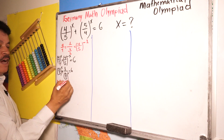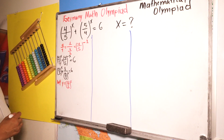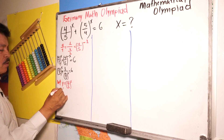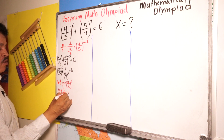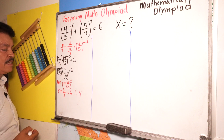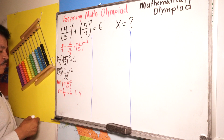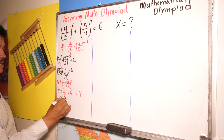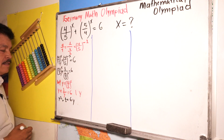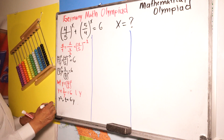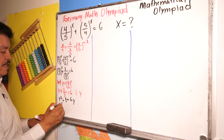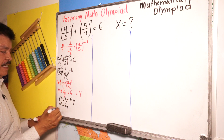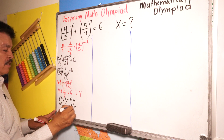Let me use a different color. Let Y equal four-fifths to the X power. So now here Y will be Y plus one divided by Y equals six. The next step should be Y squared plus one equals six Y. So next step: Y squared minus six Y plus one equals zero.